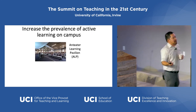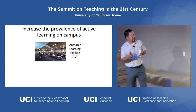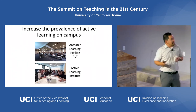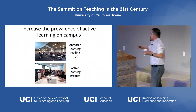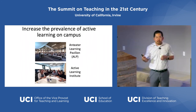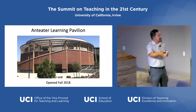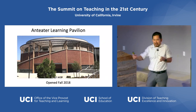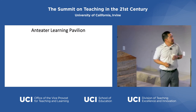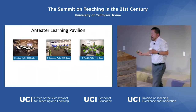There are a few ways we've been working to increase the prevalence of active learning on campus. The campus made a huge commitment to creating a new building, the Anteater Learning Pavilion. It opened in fall of 2018, and it is unique in that all of the classroom spaces are built for active learning.